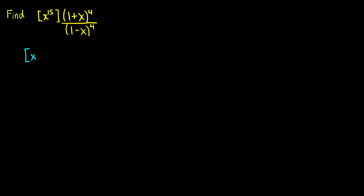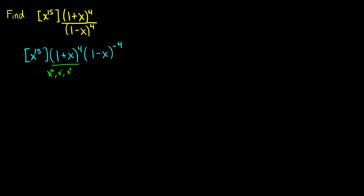The first thing we're going to do is bring everything up to the numerator. So we're going to find the coefficient of x to the 15 of (1 + x)^4 multiplied by (1 - x)^(-4). I want to point out that from (1 + x)^4 the most we can get is x^4, but we could also get x^0, x^1, x^2, or x^3. So we have five different possibilities, and we're going to have five cases here which we'll add together.